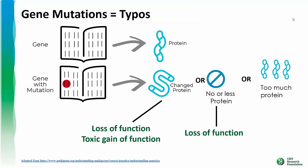A mutation, or a typo in a gene, alters the protein which is encoded by that gene. A mutation in a specific gene will change the protein it encodes in different ways. One possibility is that a changed protein is produced. This changed protein either can't carry out its normal function — this is called loss of function — or gains an abnormal function that is deleterious to the cell. This is called toxic gain of function.